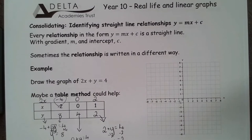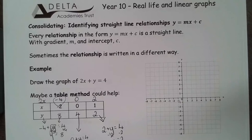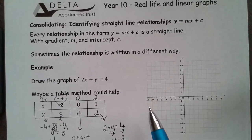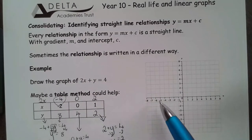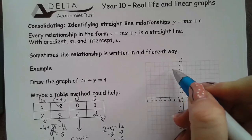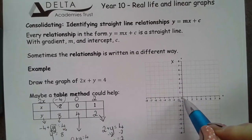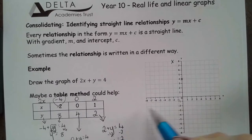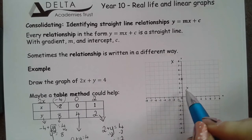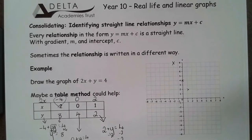I've then got coordinates that I can plot on my graph. So, I'm going to negative 2, then up to 8. 0 to 4. 1 to 2. And then I can join those up.